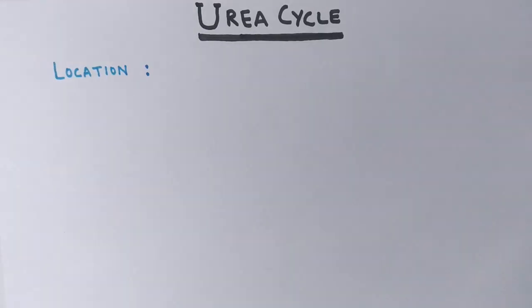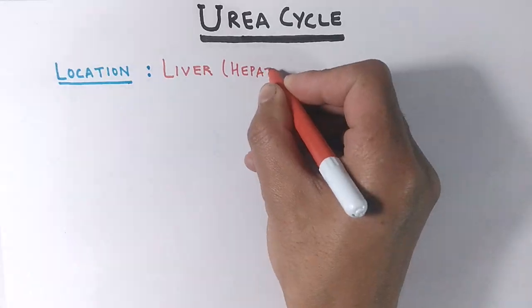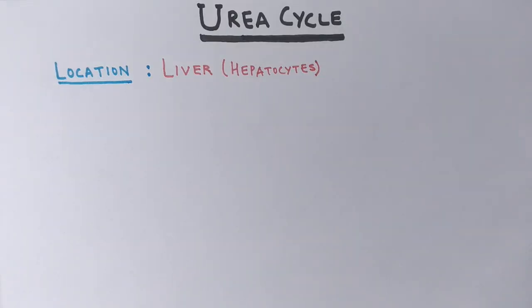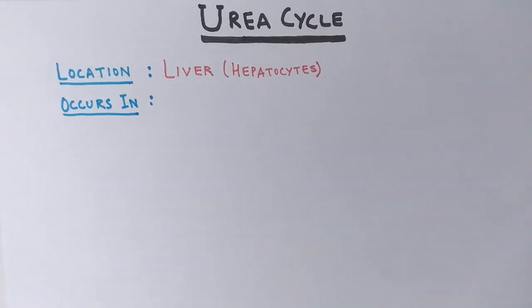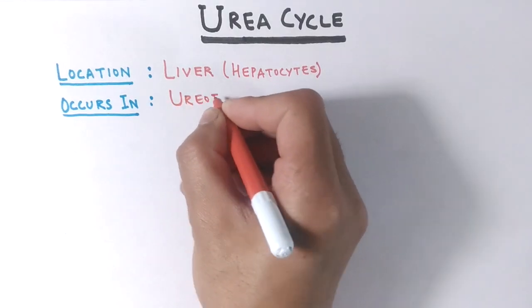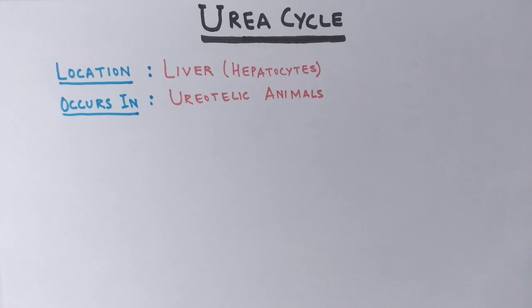Less dilution is needed for urea, so water is conserved. The urea cycle takes place in liver cells called hepatocytes, and the kidney plays a final role when urea is transported for elimination. This process occurs in animals called ureotelic animals — animals which excrete urea as a waste product.